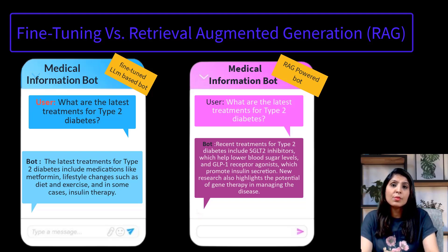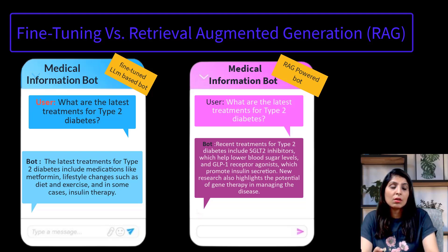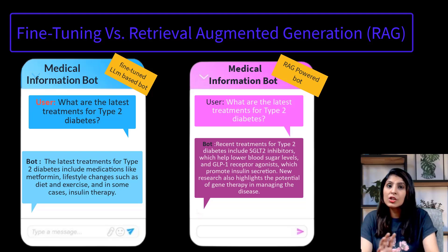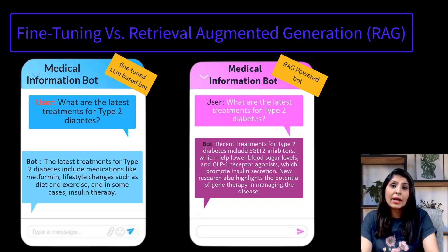On the other hand, fine-tuned models are suitable for scenarios like a product recommendation system. For example, e-commerce platforms wanting to recommend products based on user preferences and behavior can fine-tune an LLM on historical purchase data and user interactions, which enhances recommendation accuracy. Both RAG and fine-tuning each have their strengths depending on your needs.